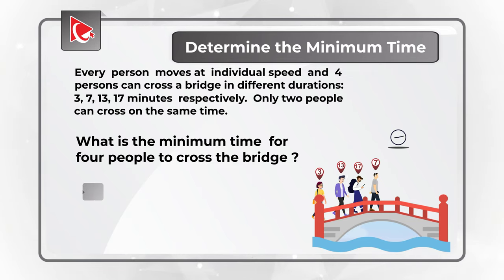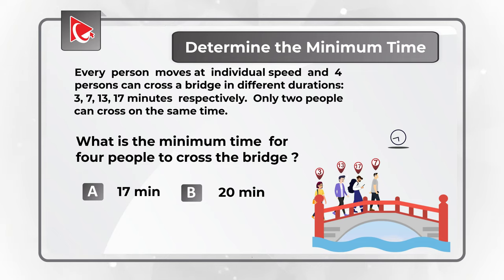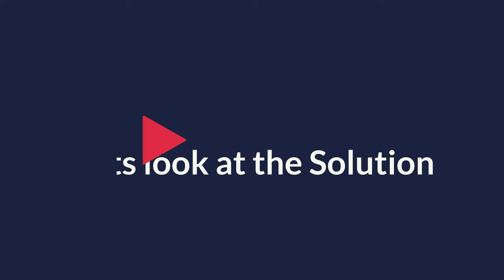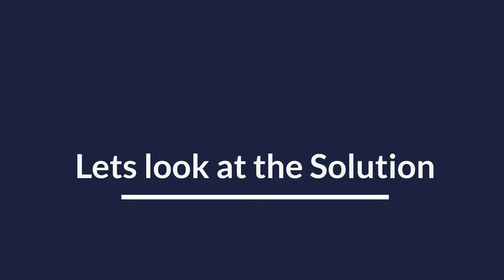You are presented with four choices: choice A is 17 minutes, choice B is 20 minutes, choice C is 34 minutes, and choice D is 12 minutes. Are you ready for the challenge? Let's move forward and get to the correct solution together.